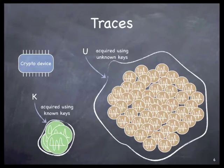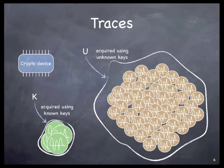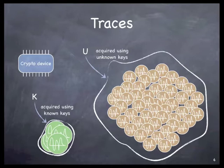The first step is data acquisition, and in this case we are going to acquire two sets of data. The first one is called set U for unknown keys — these are acquired while people are using the crypto device and we don't know the value of the key related to each power trace in set U. At the same time, we are going to acquire another set of traces labeled K for known keys. This is a small set of power traces acquired while the attacker and his accomplices are using their own known keys. We will analyze set K, extract some knowledge from it, and then use it to build a template with set U.